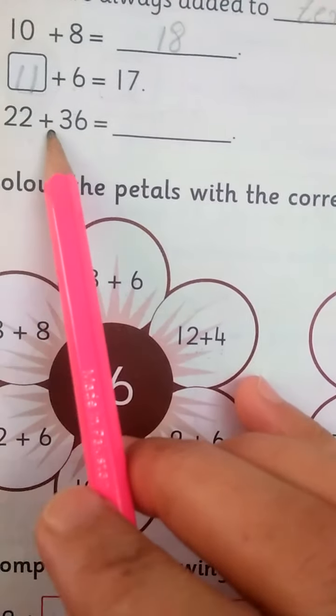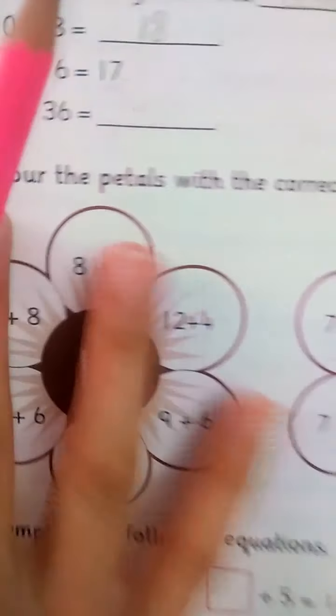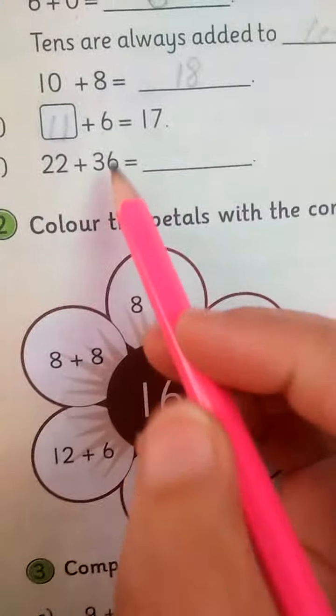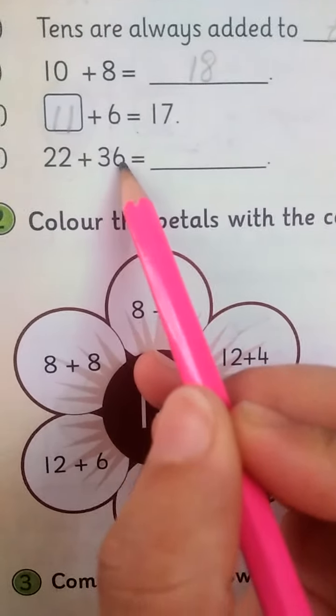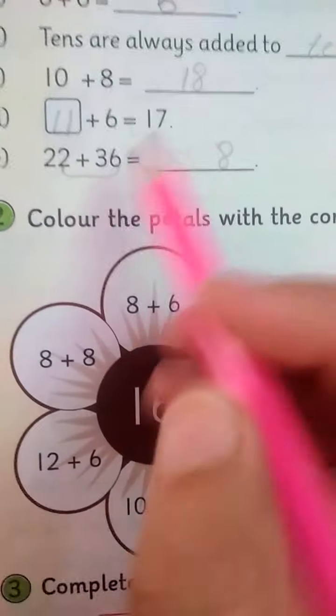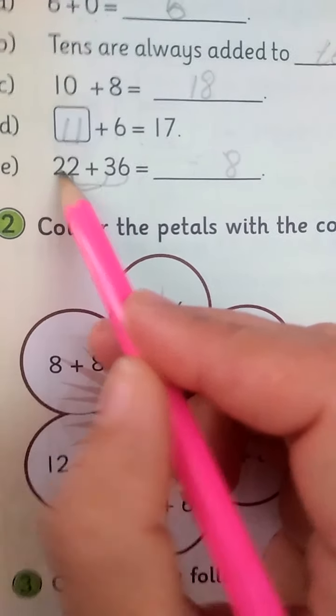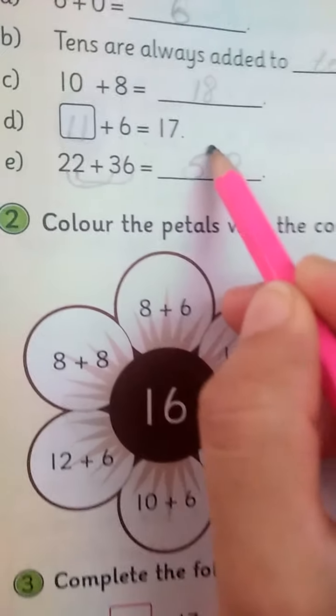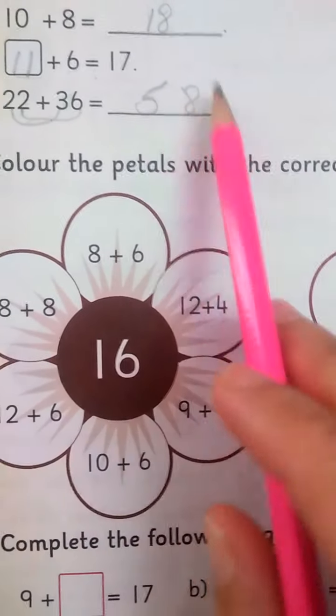The next one is 22 plus 36. You have to write this digit. The answer is 58.